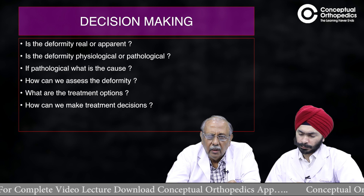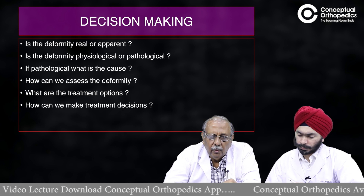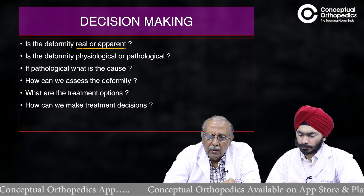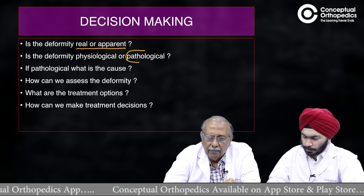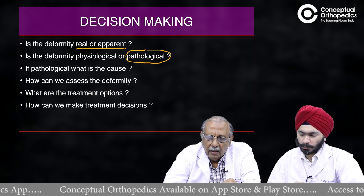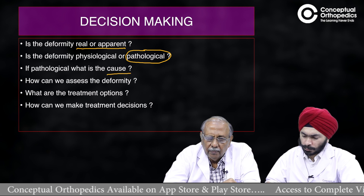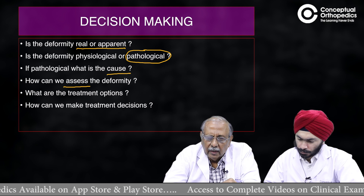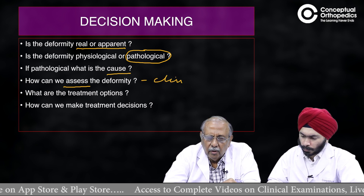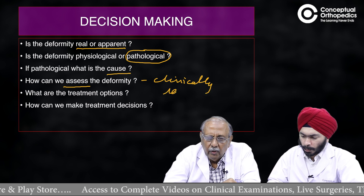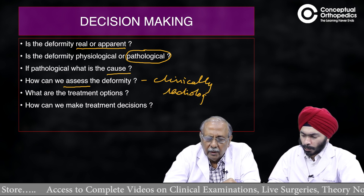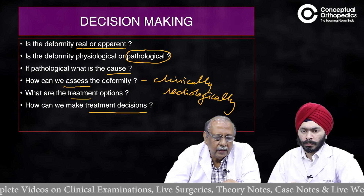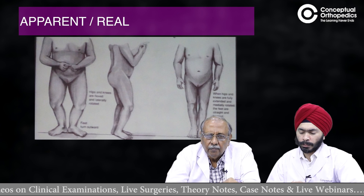How will you make a decision on what to do? There are six key questions: First, is the deformity real or apparent? Second, is it physiological or pathological? Third, if pathological, what is the cause? Fourth, how can we assess it clinically and radiologically? Fifth, what treatment options are available? And sixth, how will you make treatment decisions?